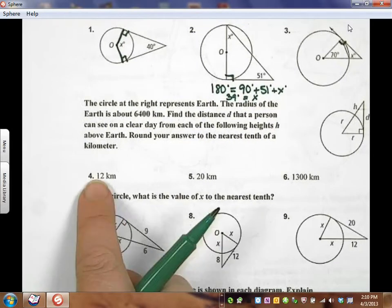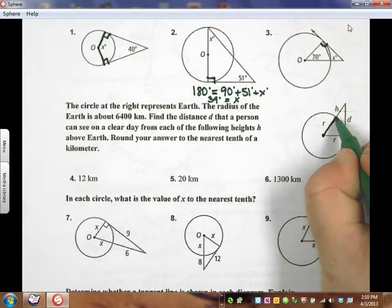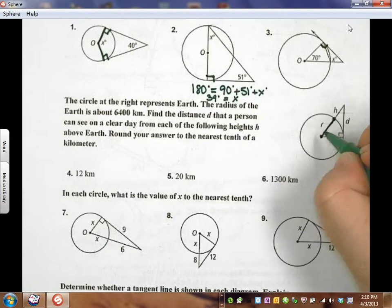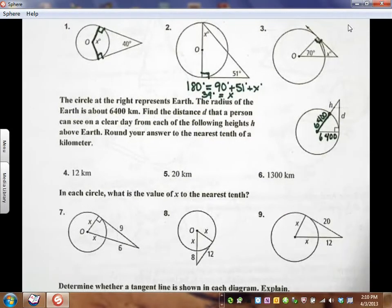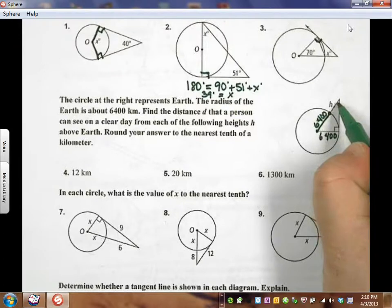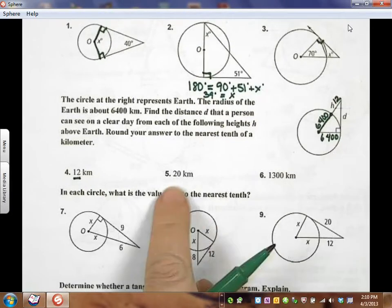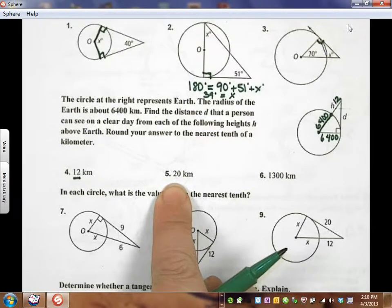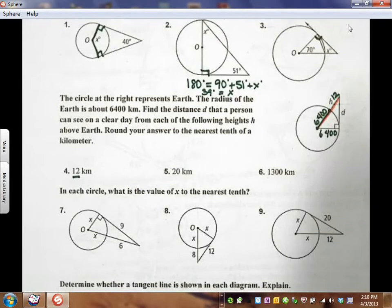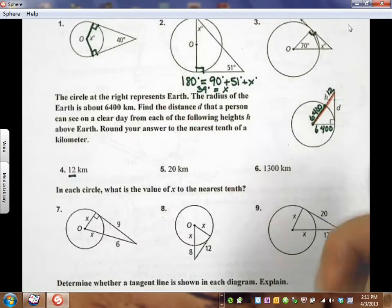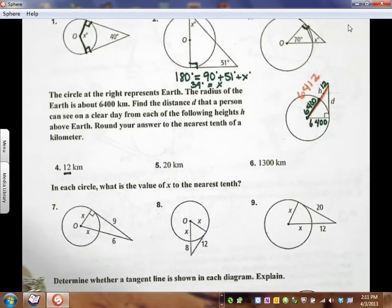It's the same kind of problem as down here. They've already drawn a picture out here for you. They're telling you that the radius from here to here is 6,400 kilometers. But what they're going to tell you is the height you're above the earth is going to change. In this problem, we're 12 kilometers above. So what is the length of this whole line from here all the way out to there? Well, we have to add them together.